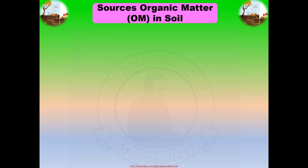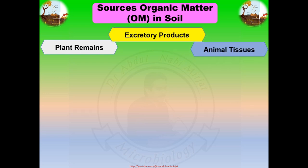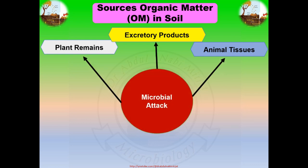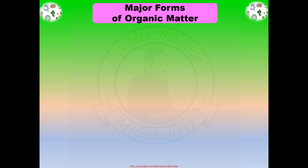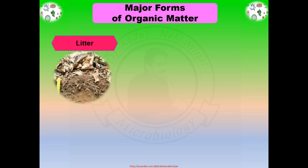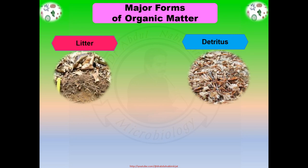Sources of organic matter in soil. What are the different sources of organic matter in soil? Organic matter in soil comes from several sources such as plant remains, animal tissues, and excretory products. All of these substances sooner or later are subjected to microbial attack and finally converted into food of the soil organisms. Organic matter is divided into three major forms: Litter, Detritus, and Humus.